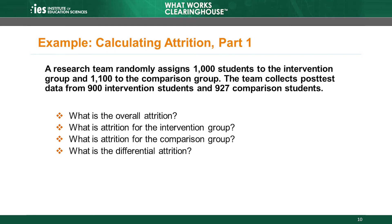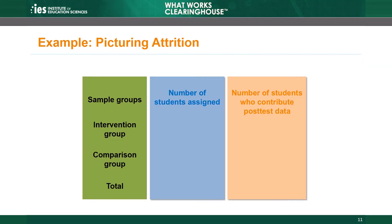Let's walk through an example of calculating attrition. A research team randomly assigns 1,000 students to the intervention group and 1,100 to the comparison group. The team collects post-test data from 900 intervention students and 927 comparison students. For the intervention group, there are 1,000 students and the researchers collected post-test data for 900 of them. For the comparison group, there are 1,100 students and the researchers collected post-test data for 927 of them. The total sample size is 2,100 students, and the total number of students with observed post-test data is 1,827 students.